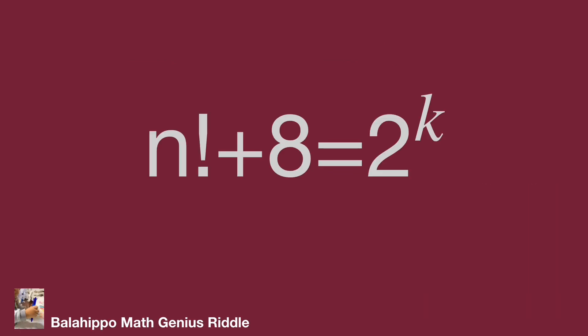The condition is that n and k are positive integers, and the given equation is n factorial plus 8 equals 2 to the power of k. First, check each term. We find 2^k has base 2, and 8 equals 2 cubed, so it also has base 2.